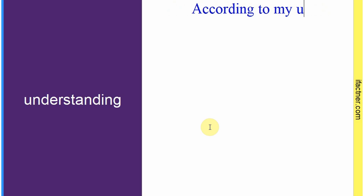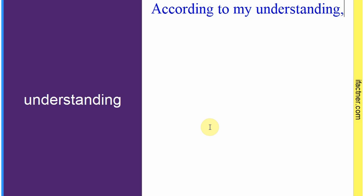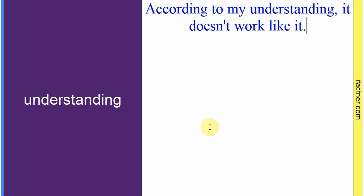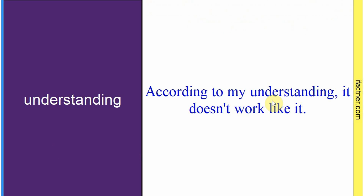Word hai: 'understanding'. Sentence banaate hain meaning samajhne ke liye: 'According to my understanding, it doesn't work like this.' Jahan tak meri understanding hai, jahan tak mein samajhta hoon, yeh is tarah kaam nahin karta. Toh 'understanding' hoti hai 'samajh' — yaani meri samajh, aap ki samajh. Sentence banaaya: 'According to my understanding, it doesn't work like this.'